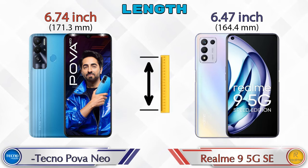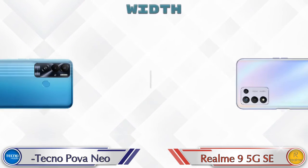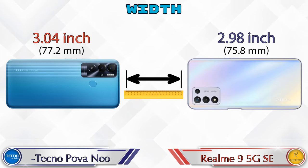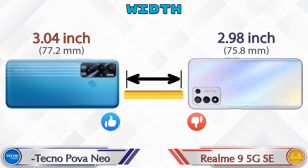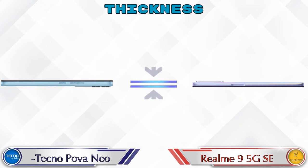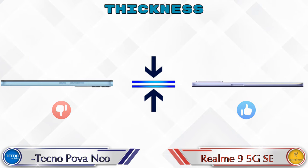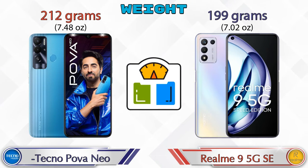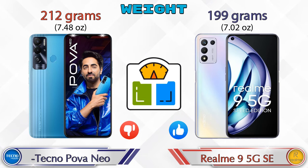Talking about dimensions: Pova Neo has a length of 6.74 inches and 9 5G SE is 6.47 inches. Width: Pova Neo is 3.04 inches and 9 5G SE is 2.98 inches. Thickness: Pova Neo is 0.36 inches and 9 5G SE is 0.33 inches. Weight: Pova Neo is 112 grams and 9 5G SE is 199 grams.